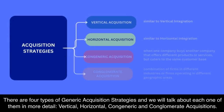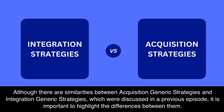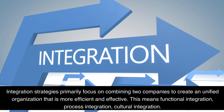There are four types of generic acquisition strategies: vertical, horizontal, congeneric, and conglomerate acquisitions. Although there are similarities between acquisition generic strategies and integration generic strategies discussed in a previous episode, it is important to highlight the differences. Integration strategies primarily focus on combining two companies to create a unified organization that is more efficient and effective — meaning functional integration, process integration, and cultural integration.